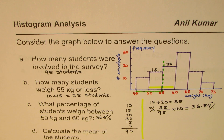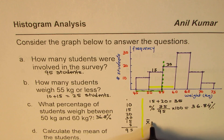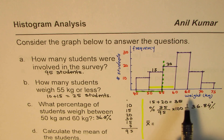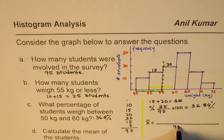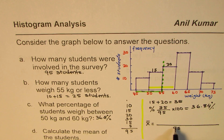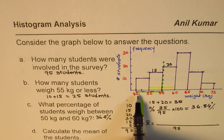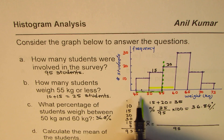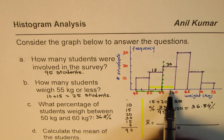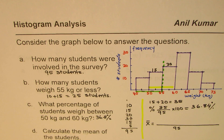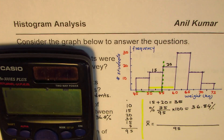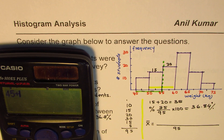Now the question is: calculate the mean of the students. To calculate the mean we divide by the total number of students, which is 95. For the numerator, we take the middle value of each group because we don't know exactly how much each student weighs. For the group 45 to 50, we add 45 + 50 and divide by 2, which gives a midpoint of 47.5.